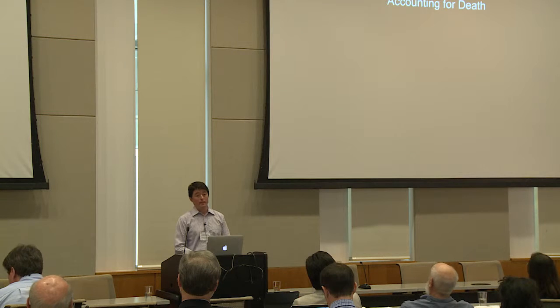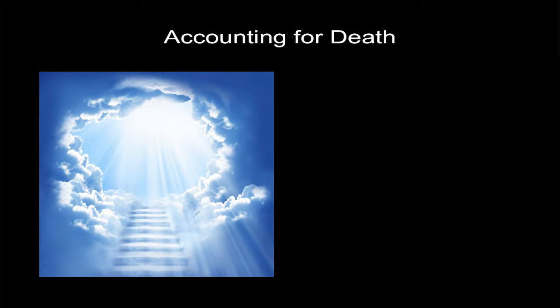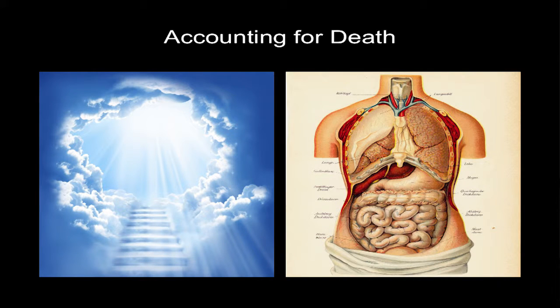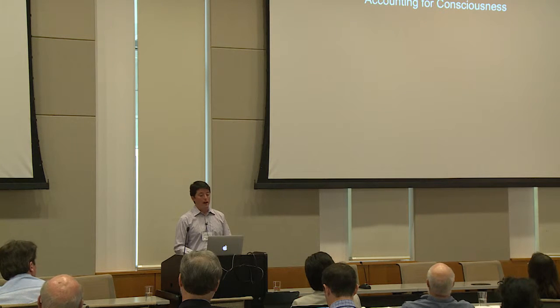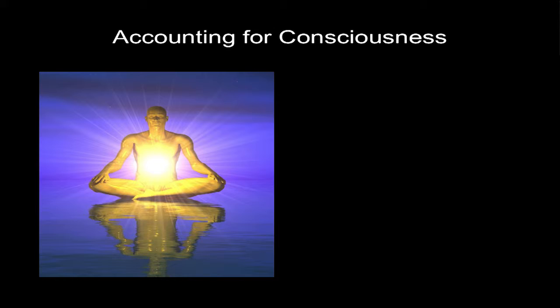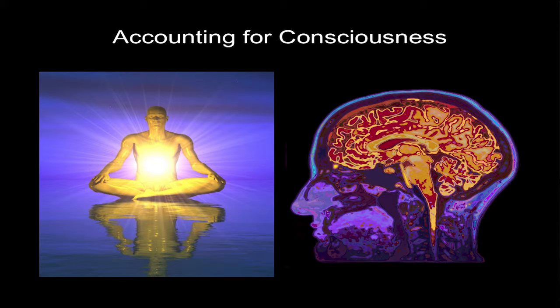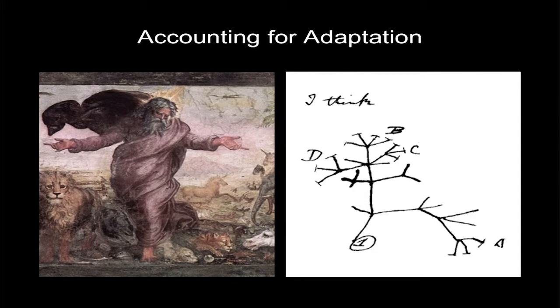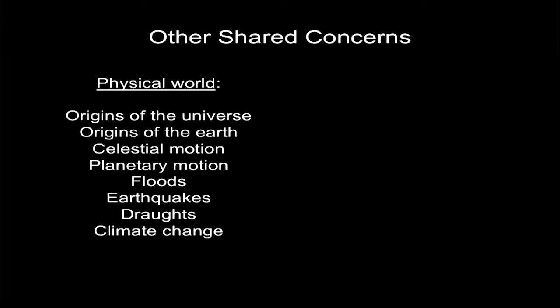Consider the observable phenomenon of death. Religions often explain death in terms of the unobservable process of a spiritual transformation where we end up in an unobservable afterlife. Science, on the other hand, explains this observable phenomenon in terms of the breakdown of unobservable bodily organs — not unobservable in principle, but unobservable to the average person. If we turn to consciousness, religions often explain it in terms of an unobservable soul, the seat of personal identity, whereas science explains consciousness in terms of the unobservable workings of neurons. With respect to biological adaptation, many religions explain this in terms of some unobservable act of divine creation, whereas science explains it in terms of unobservable processes like natural selection and descent with modification. Death, consciousness, and adaptation are just a few of many phenomena that both science and religion try to explain, covering both the physical and biological world.